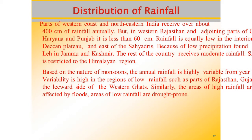Snowfall is restricted only to the Himalayan regions. Because of the nature of monsoons, annual rainfall is highly variable from year to year — there is no fixed amount. This variability is high in the regions of low rainfall like parts of Rajasthan, Gujarat, and also the leeward side of the Western Ghats.